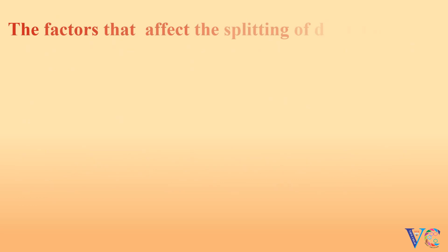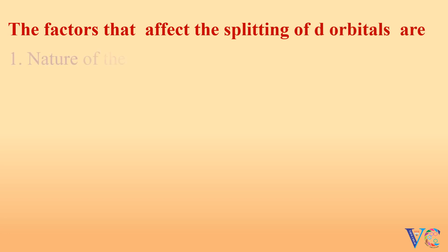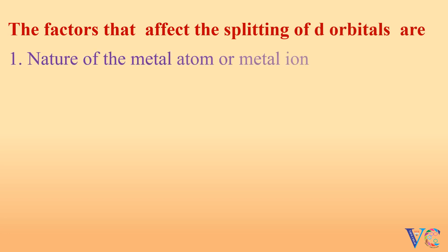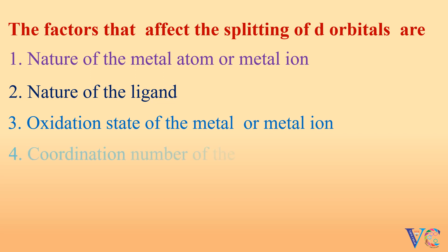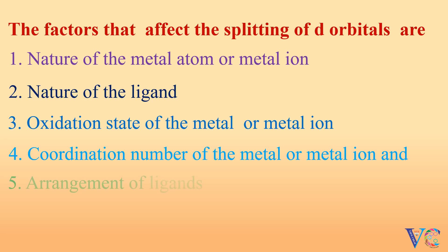The factors that affect the splitting of d orbitals are: nature of the metal atom or metal ion, nature of the ligand, oxidation state of the metal or metal ion, coordination number of the metal or metal ion, and arrangement of ligands.